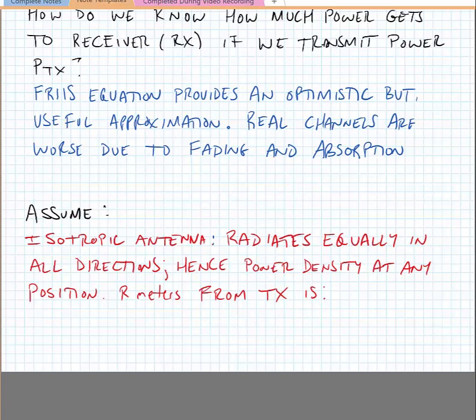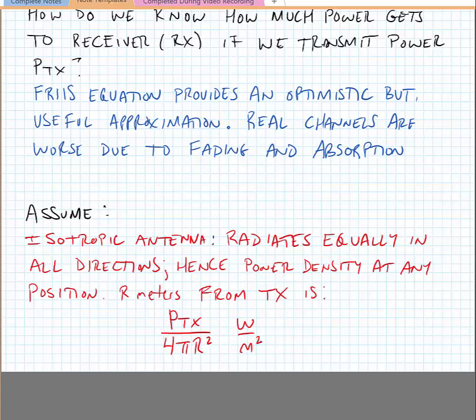We're going to assume we have an isotropic antenna, which radiates equally in all directions — spreading power equally across the surface area of the sphere radiating away from the antenna. We can calculate the power density at any position r meters away from the transmitter as Ptx divided by 4π r squared, in watts per meter squared. This is just the power transmitted divided by the surface area of a sphere r meters away.